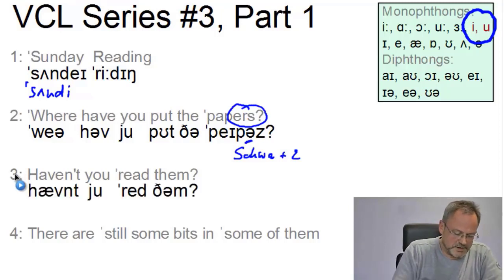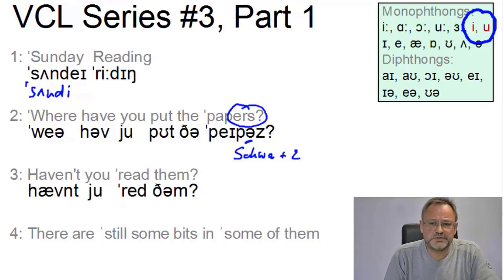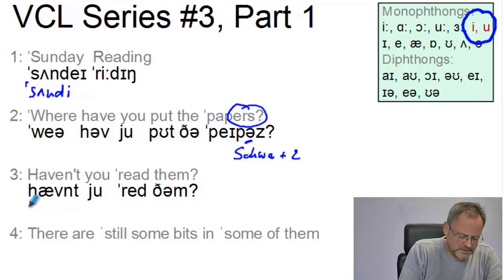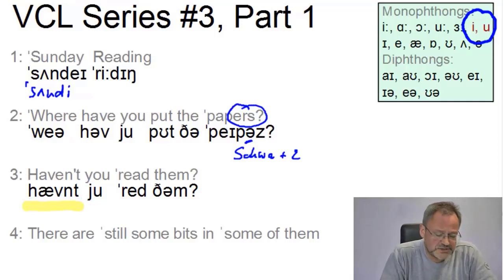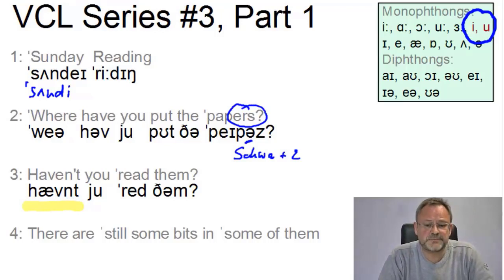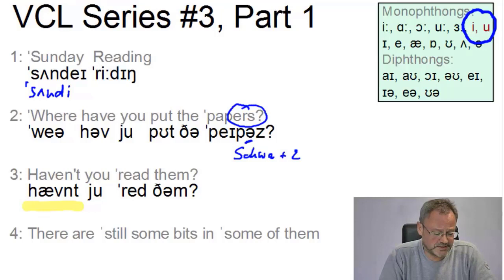Line three: 'Haven't you read them?' This is relatively unproblematic. However, in 'haven't' we might want to ask why it is not weak. The answer is quite simple: the half weakening rule only applies to declarative sentences, and this is an interrogative form.